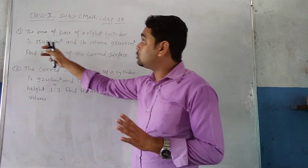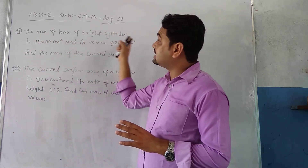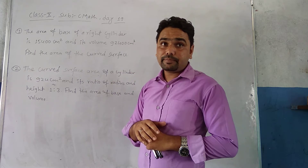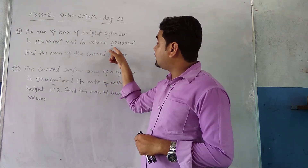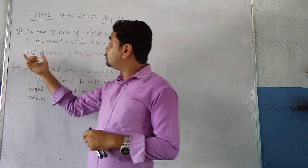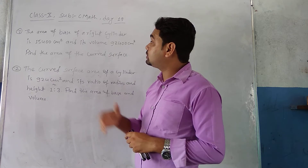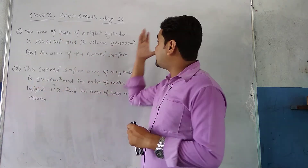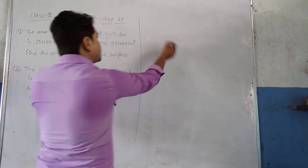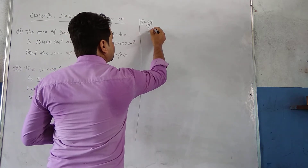Now we are on question number one. The question says: the base area of a right circular cylinder is 15400 cm² and its volume is 92400 cm³. We are going to find the curved surface area, that is CSA in short form. Let us write the solution for question one.